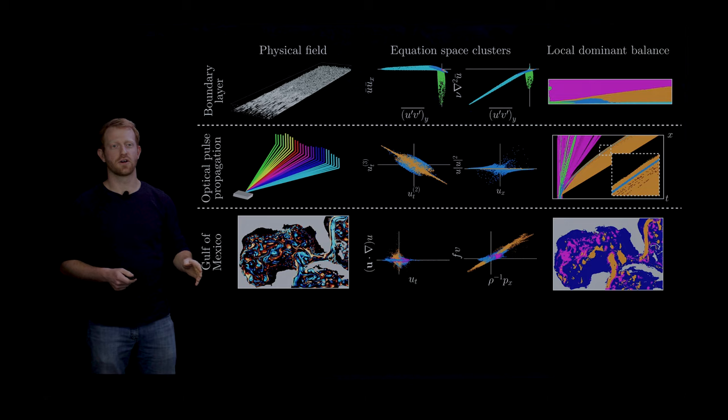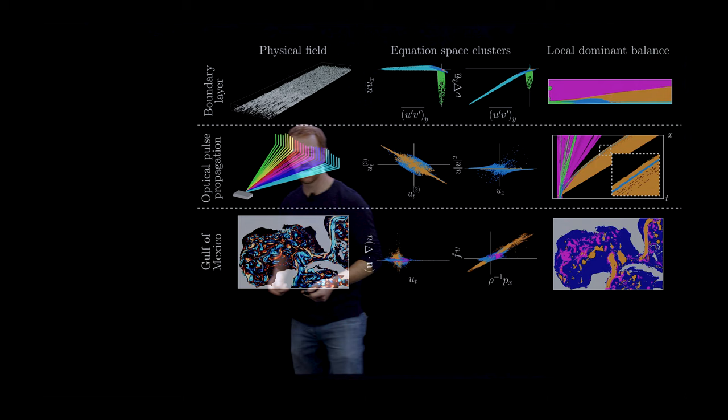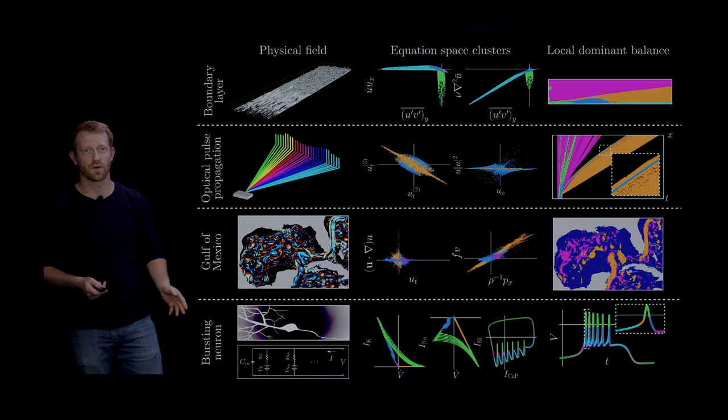We also look at reanalysis data for the surface currents in the Gulf of Mexico and we identify regions of approximate geostrophic balance including the southern end of the Gulf Stream here.